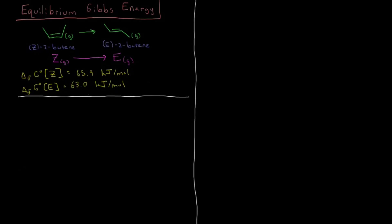We want to calculate the extent of reaction, so the first thing we need to do is set up an ICE table to figure out how many moles of each species are present at equilibrium. We have the Z reactant, the E product, and the total number of moles. We'll assume we have 1 mole of Z and 0 moles of E to start with, giving us 1 total mole of initial conditions.